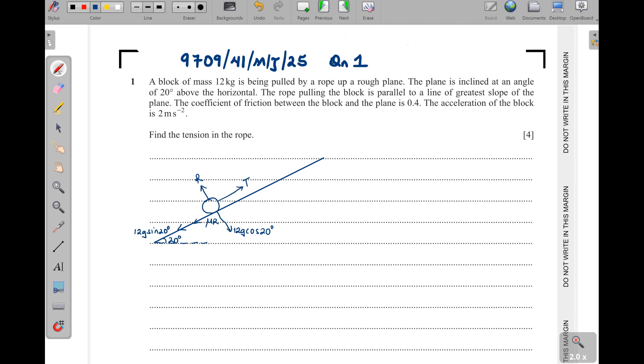So vertically, resolving forces vertically, we can see that R is equal to 12g cos 20 which is 120 cos of 20. Of course we know that g is equal to 10. There is no motion vertically. That's why the result of the forces perpendicular to the plane is zero. So in other words, what is here is equal to what is going down.